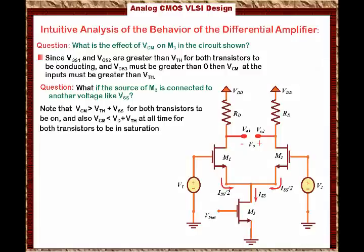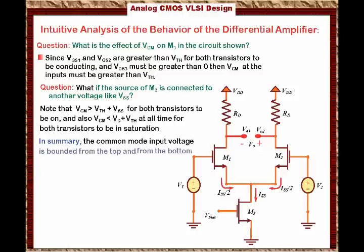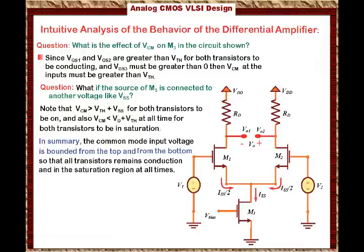In summary, the common mode input voltage is bounded from the top and from the bottom, so that the transistors remain conducting and in the saturation region at all times. The common mode input voltage to the differential amplifier is very important: how high we can go is limited so that both transistors are in the saturation region, and how low we can go is limited so that the bias current through the circuit is not affected.